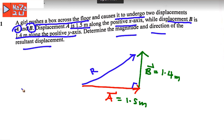You can use the triangle here where the resultant R, or vector R, magnitude of vector R is equal to magnitude of vector A, 1.5 squared, plus vector B, 1.4 squared.